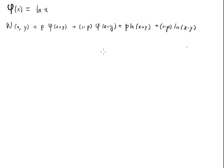We want to find the maximum expected utility. We call this v₁(x), where the subscript 1 means we only have one game to play. We maximize over y, so after optimization we only have x left. The constraint is that y is between 0 and x.